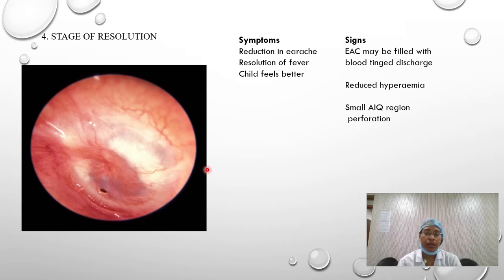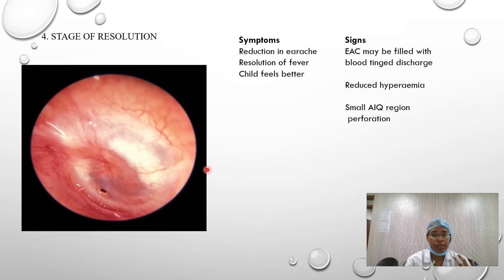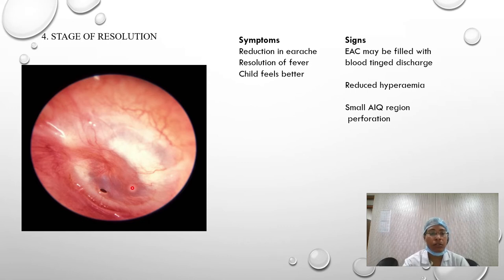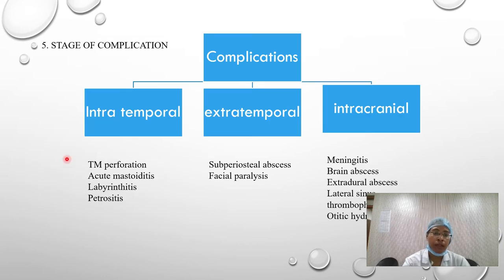The fourth is the stage of resolution. As the name suggests, symptoms and signs resolve — earache resolves, fever reduces, and the child feels better, but there is now ear discharge. On otoscopic examination, pus or discharge may be present in the external auditory meatus, along with reduction of hyperemia of the tympanic membrane. The discharge may indicate a perforation in the tympanic membrane, which may be in the antero-inferior or posterior region.